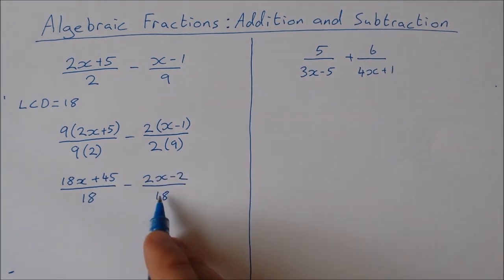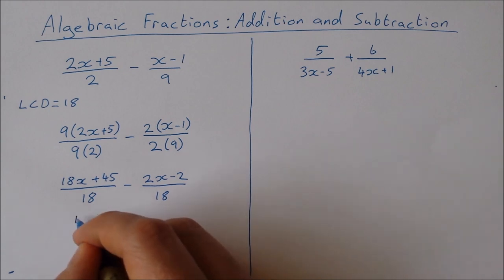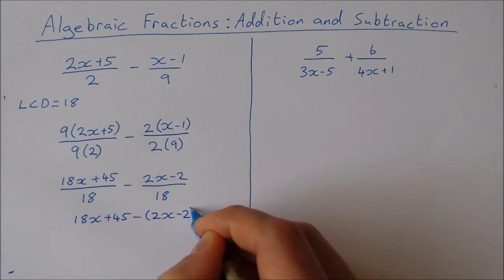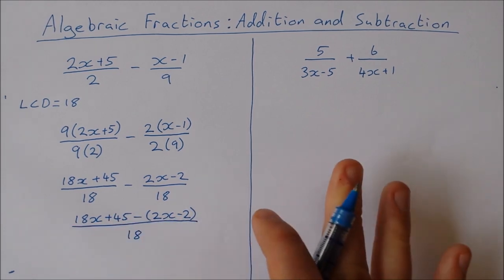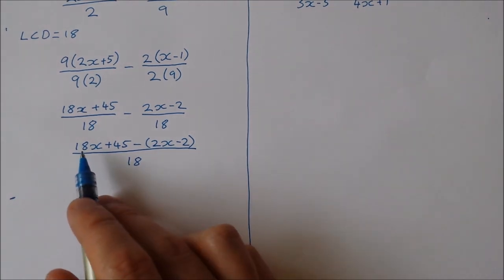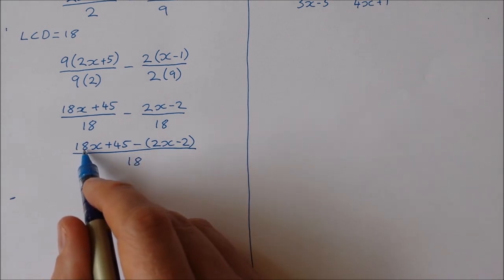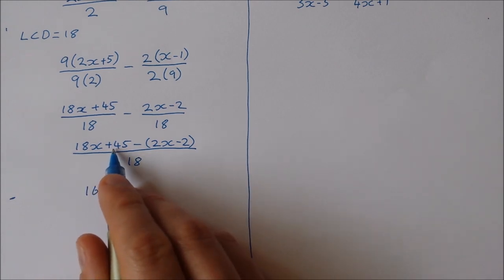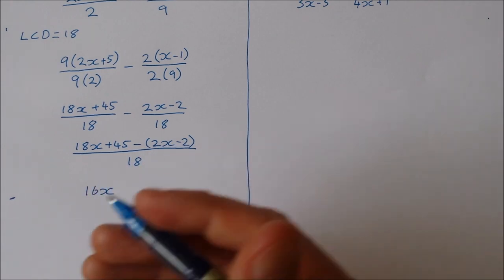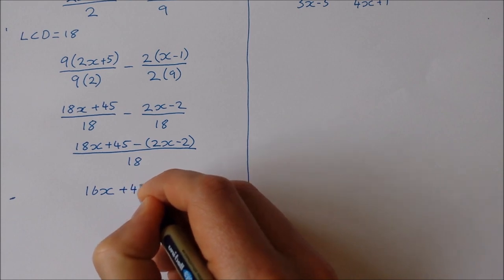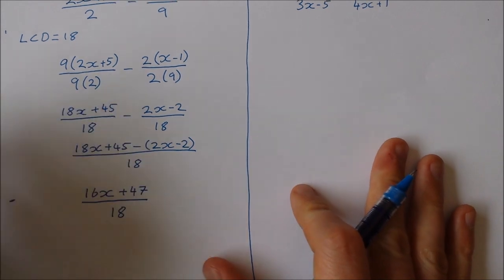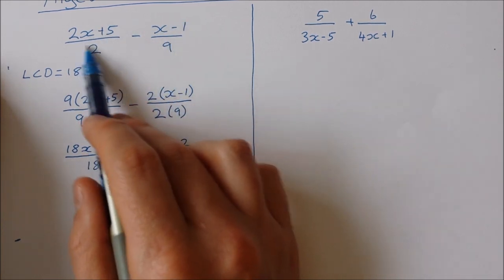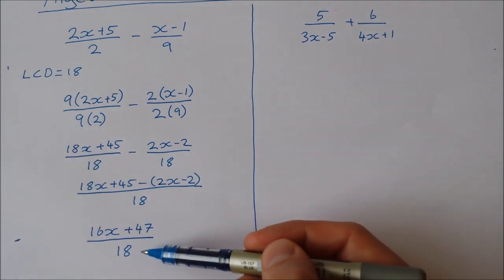Now I have the same denominator on both fractions, so I can write them as a single fraction: 18x plus 45 minus 2x minus 2, all over 18. Tidying up the top line: 18x minus 2x gives 16x, and 45 minus minus 2 is 45 plus 2, so that's plus 47. The final answer is 16x plus 47 over 18.